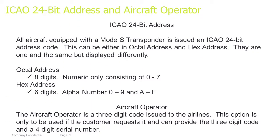ICAO 24-bit address and aircraft operator. All aircraft equipped with a Mode S transponder are issued an ICAO 24-bit address code. This can be either in octal address or hex address. They are one and the same, but displayed differently — meaning if you have a hex address, you can convert it into an octal address and vice versa.